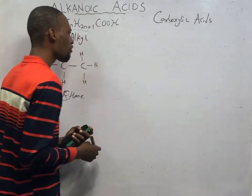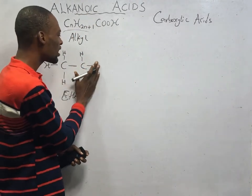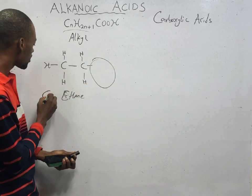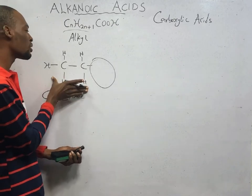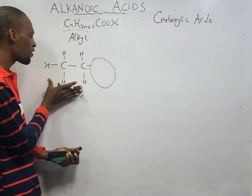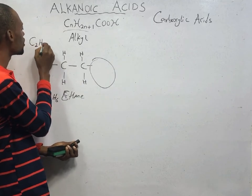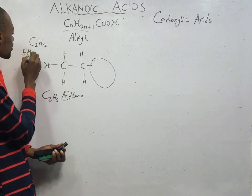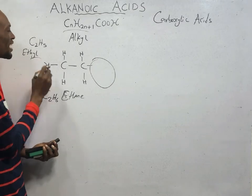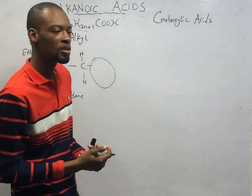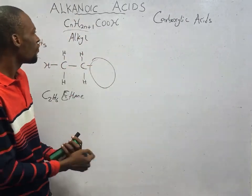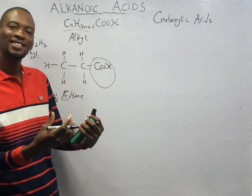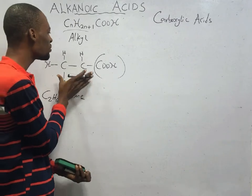For substitution to take place, one hydrogen atom must leave. So instead of C₂H₆, the compound becomes C₂H₅ — that is the ethyl group, which is an alkyl group formed when ethane loses one hydrogen. Then the COOH group attaches here to form an acid.